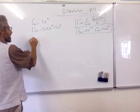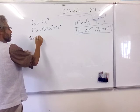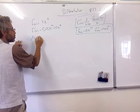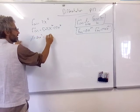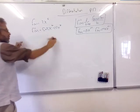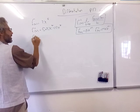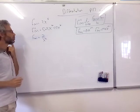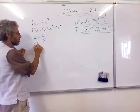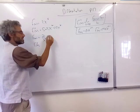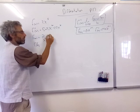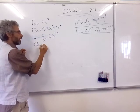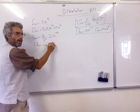What about if I have something like 2 over x²? Remember how we rewrite that: 2 over x² becomes 2x^(-2), and now I can use the same rule. The derivative will be -4x^(-3). We're happy with that.